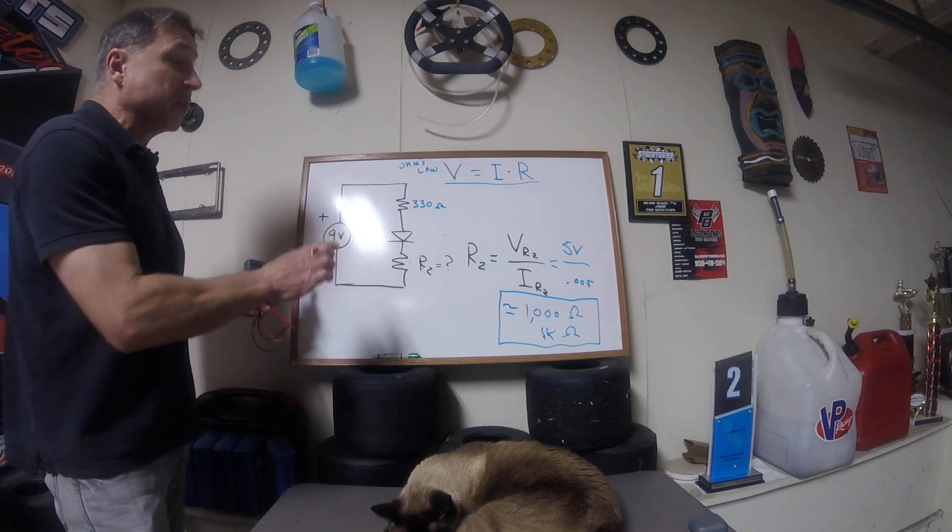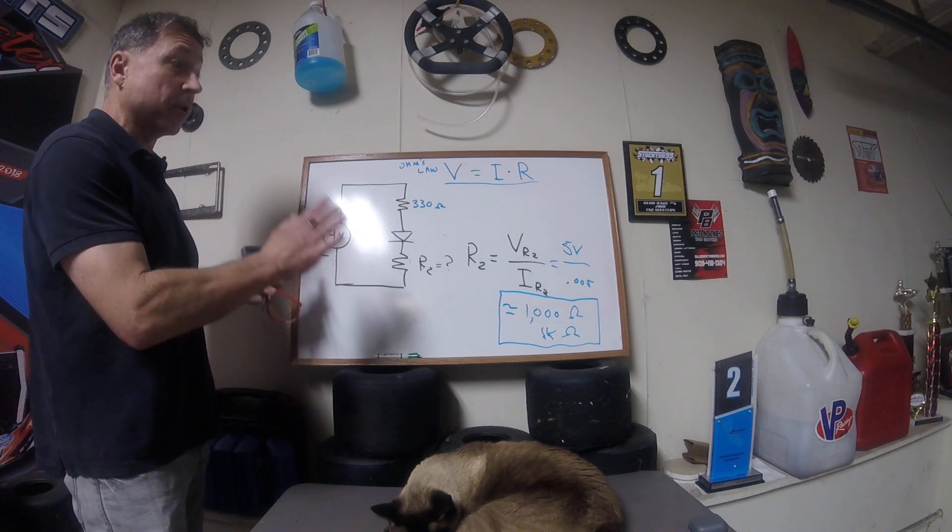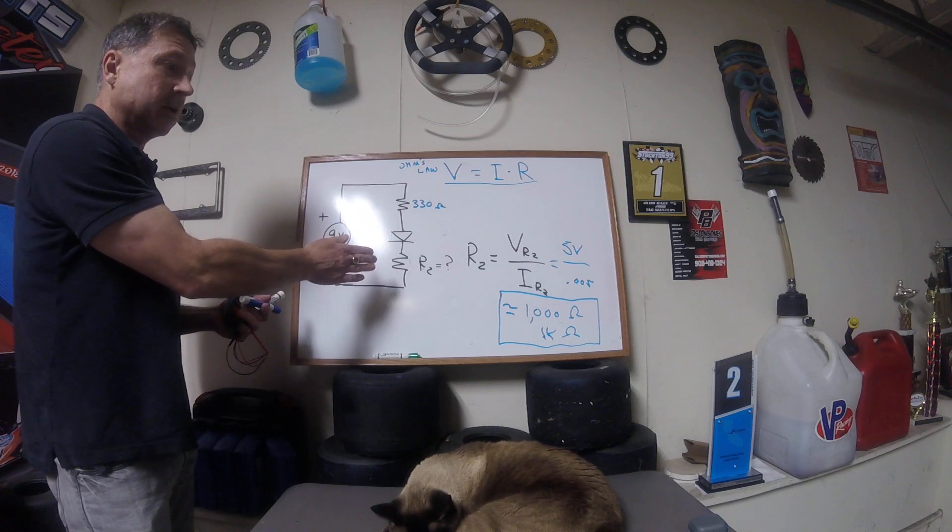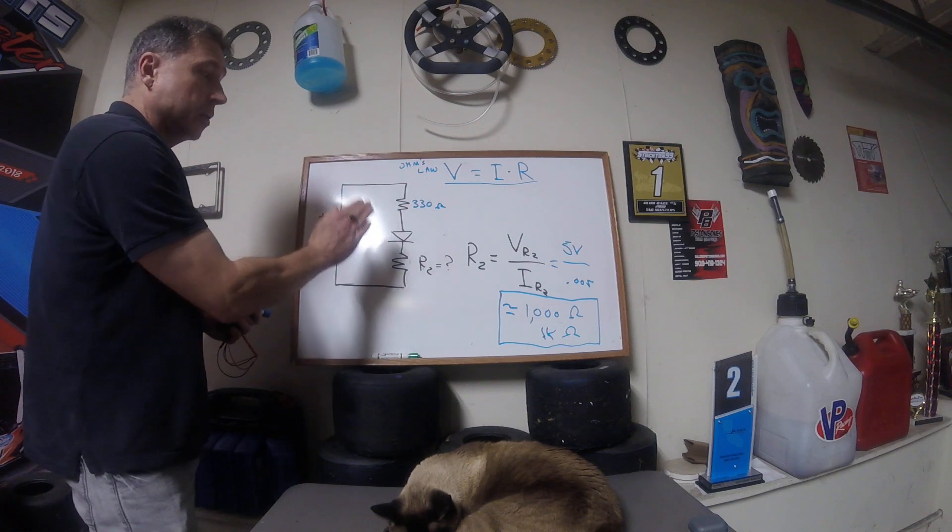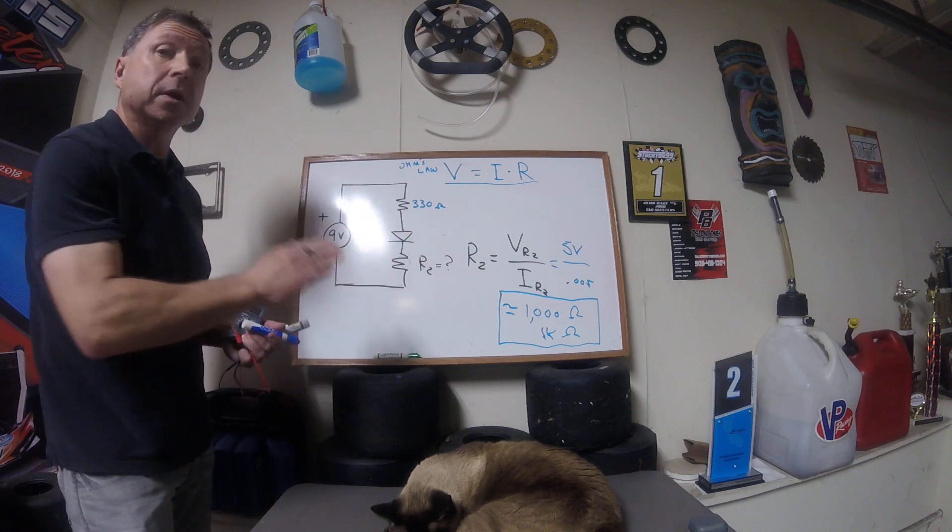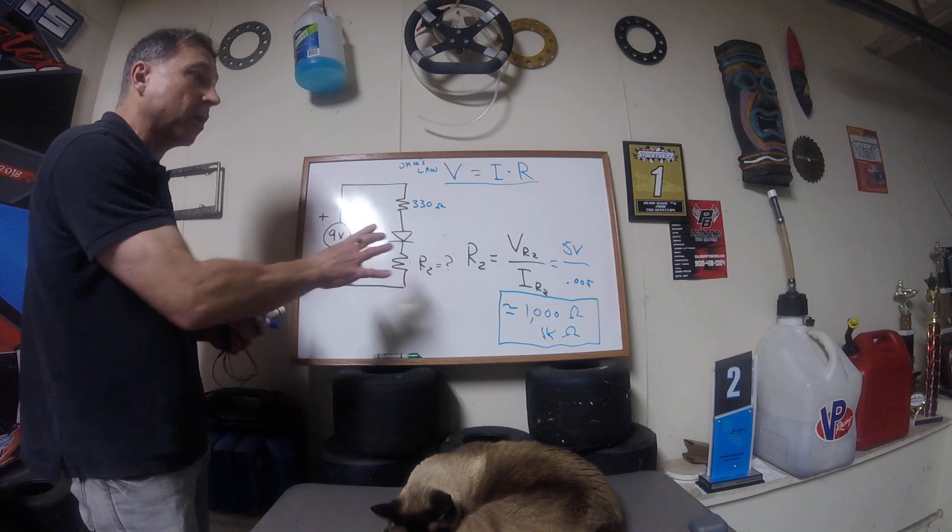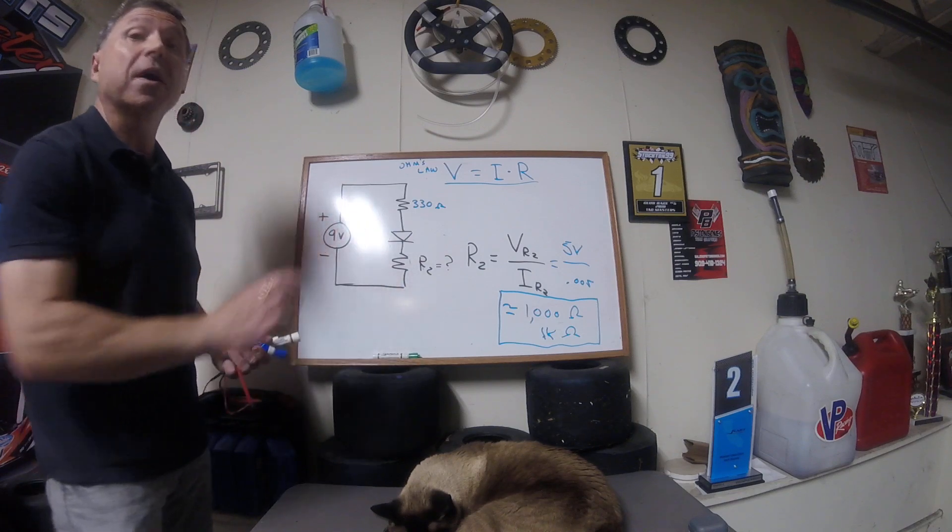So that wraps up the second part of the circuit analysis for the simple series lab with the LED in it. And your unknown resistor may not be a 1,000 ohms resistor. It may be something else, so your numbers are going to be a little different, but this shows the process to find that unknown value.